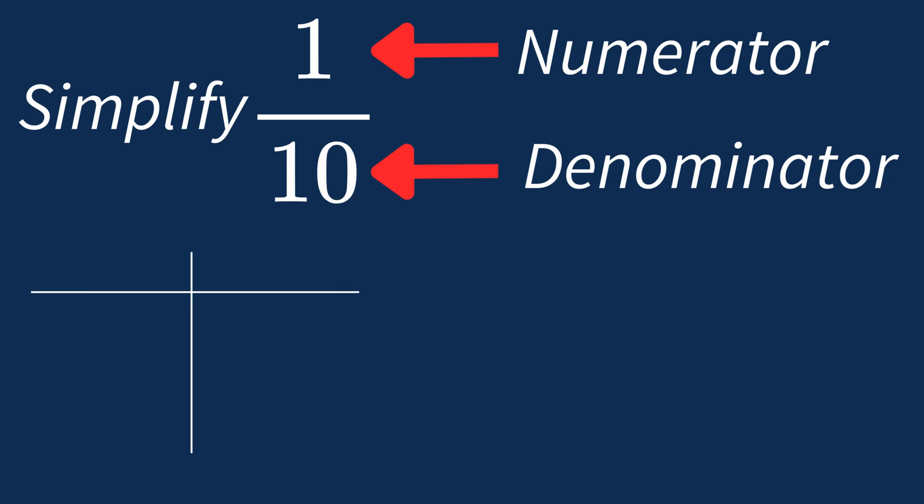Let's look at the factors for each number in our fraction. For 1, the only factor is 1. For 10, the factors are 1, 2, 5, and 10.